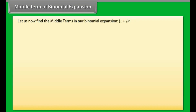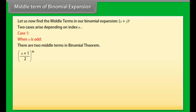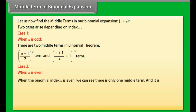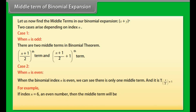Middle Term of Binomial Expansion: Let us find the middle terms in the expansion of (x + y)ⁿ. Two cases arise depending on index n. Case 1: When n is odd, there are two middle terms — the ((n+1)/2)th term and the ((n+1)/2 + 1)th term. Case 2: When n is even, there is only one middle term, which is T(n/2 + 1). For example, if n = 6 (even), the middle term is T(6/2 + 1) = T4.